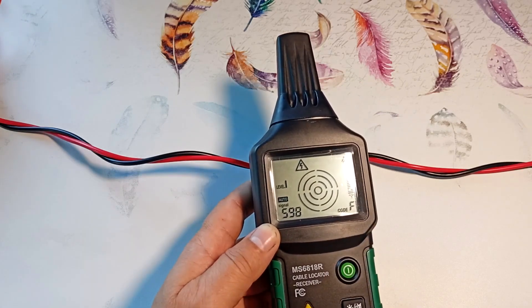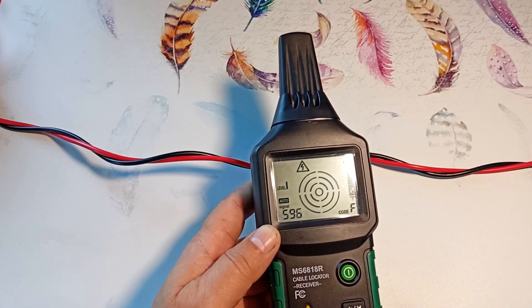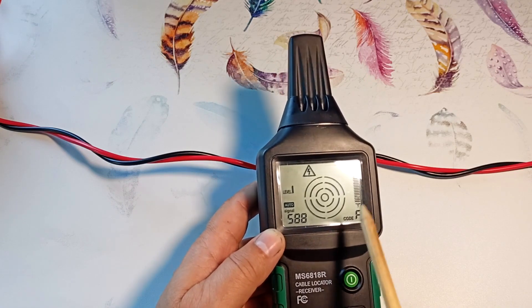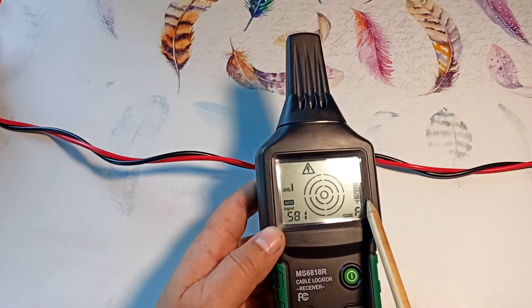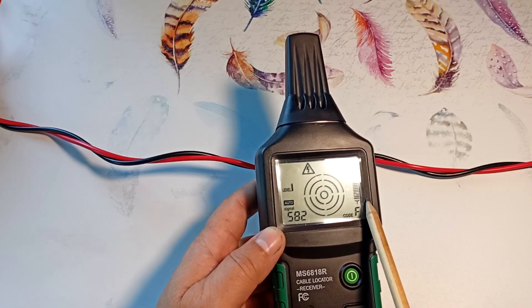And it shows the signal reception level in three ways. The first is the scale. The larger it is, the higher the signal, the closer the wire is to us.